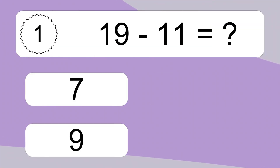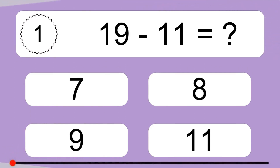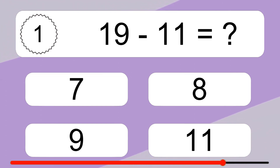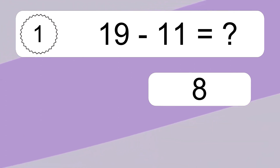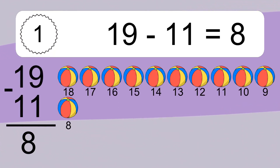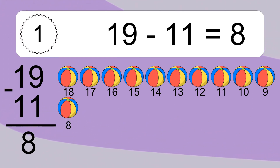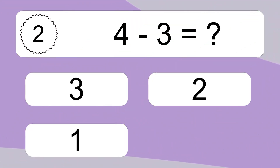19 minus 11 equals what? 19 minus 11 equals 8. Let's count it: 18, 17, 16, 15, 14, 13, 12, 11, 10, 9, 8.